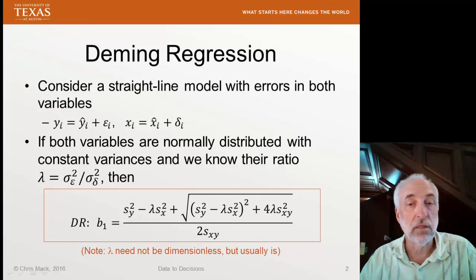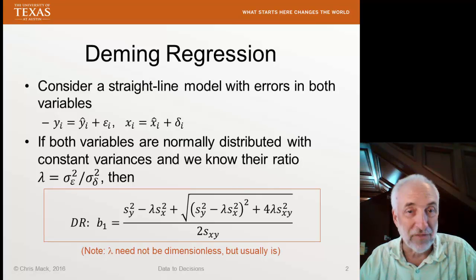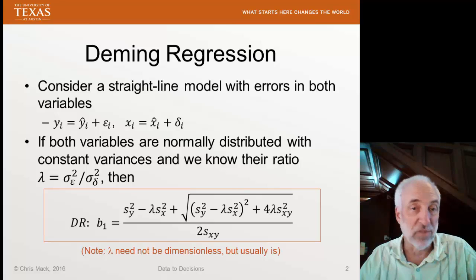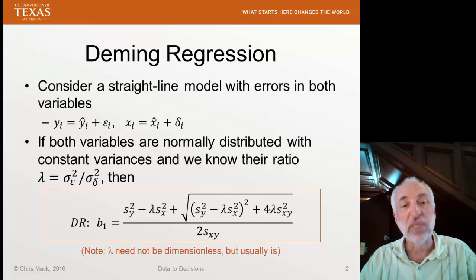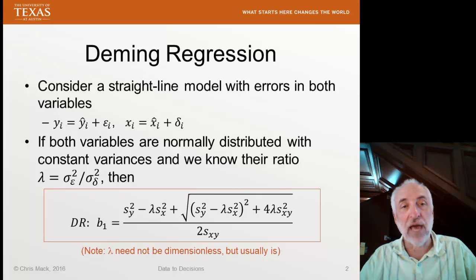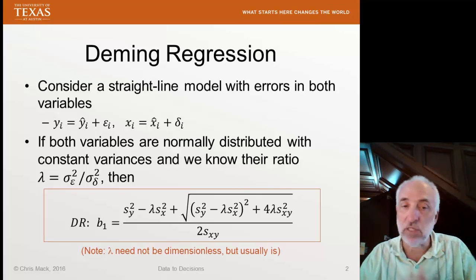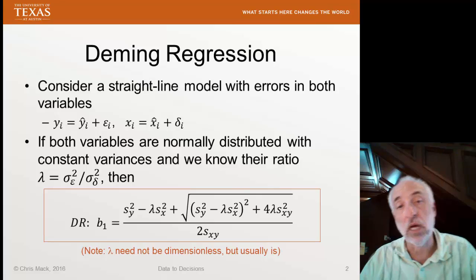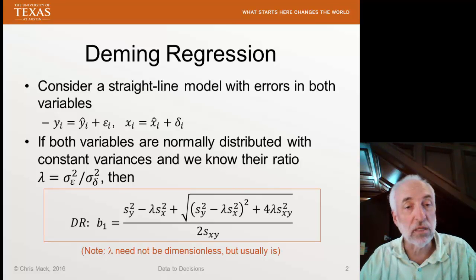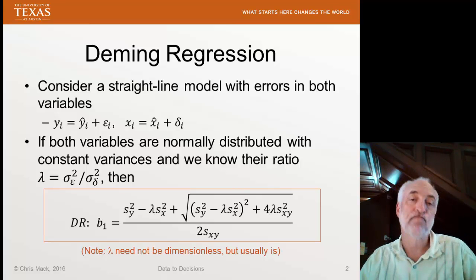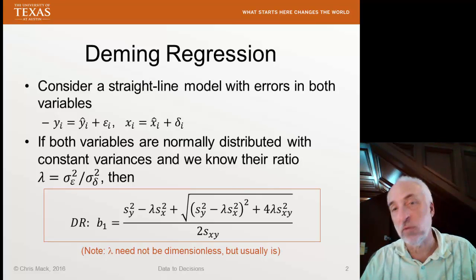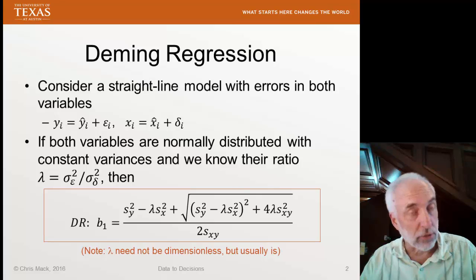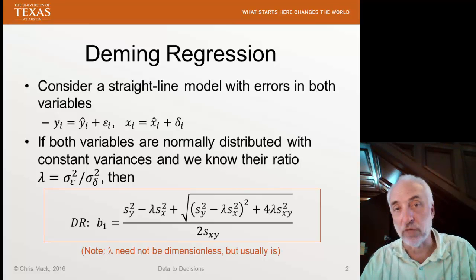Lambda is usually dimensionless if both x and y are the same variable measured in two different ways, as in a calibration curve. But they need not be — x and y can have different units, so lambda could be a measurement with units on it. A common example of when we would use Deming regression is, like orthogonal regression, a calibration curve.